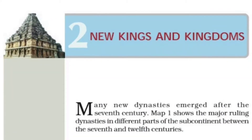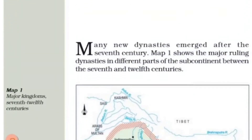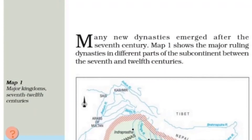Many new dynasties emerged after the 7th century. Map 1 shows the major ruling dynasties in different parts of the subcontinent between the 7th and 12th centuries.